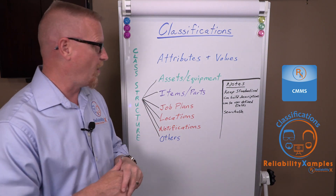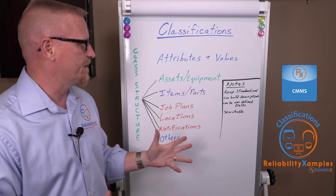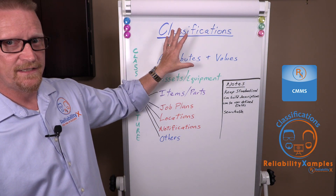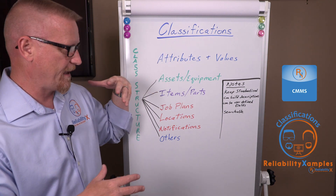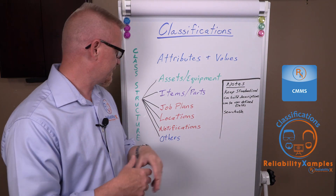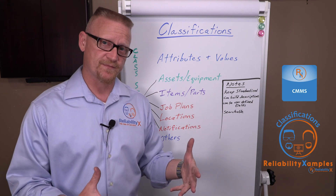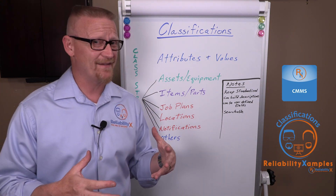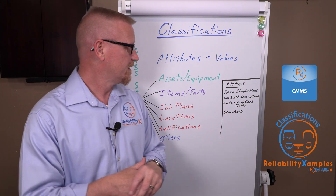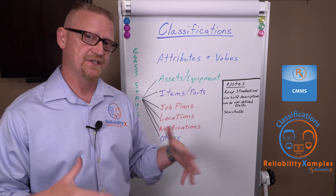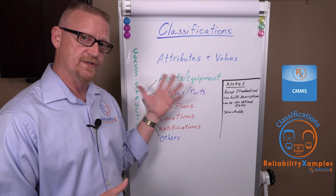There are a lot of unique scenarios around classifications. A couple of things to keep in mind: keep standardized naming conventions for your classifications and make sure you don't have multiples or duplicates of the same type of assets. Classifications can also build your descriptions — instead of having 800 inventory items that just say 'bearing', if you populate your classification attributes, that attribute list can become the description.